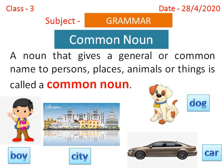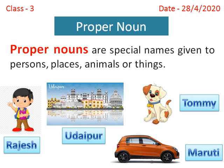For example, boy, city, dog, car. Today we will learn the next kind of noun, that is proper noun. Proper nouns are special names given to persons, places, animals or things.